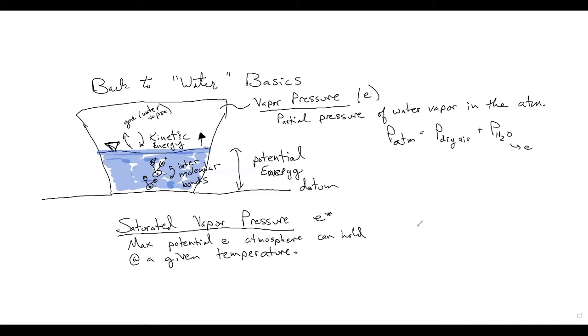Saturated vapor pressure is the maximum potential water vapor the atmosphere can hold at a given temperature. And we can look at a relationship for saturated water vapor pressure. E star, which we could represent in pascals, is a function of temperature. This could be Celsius or Kelvin. And it kind of looks like this - it's kind of like a nonlinear relationship, like a hockey stick kind of thing.